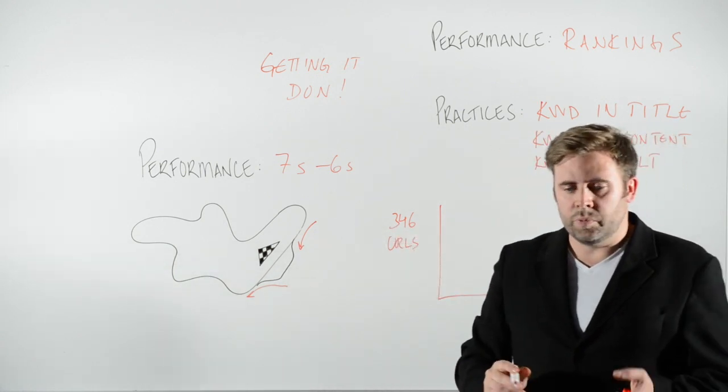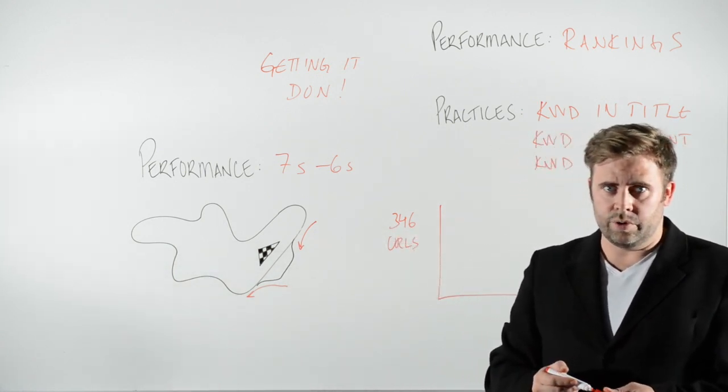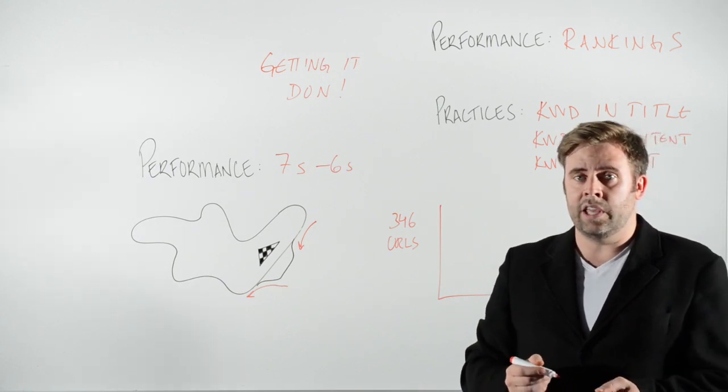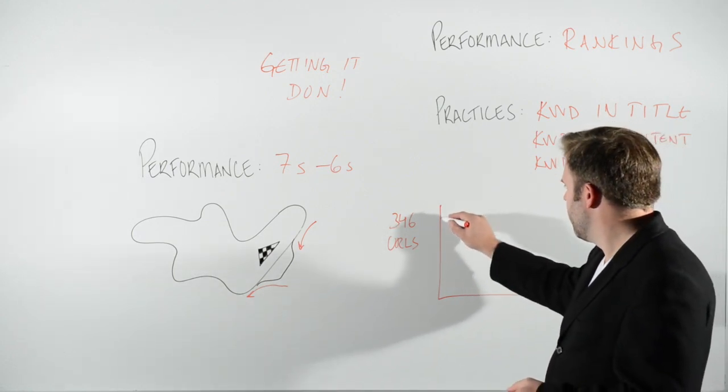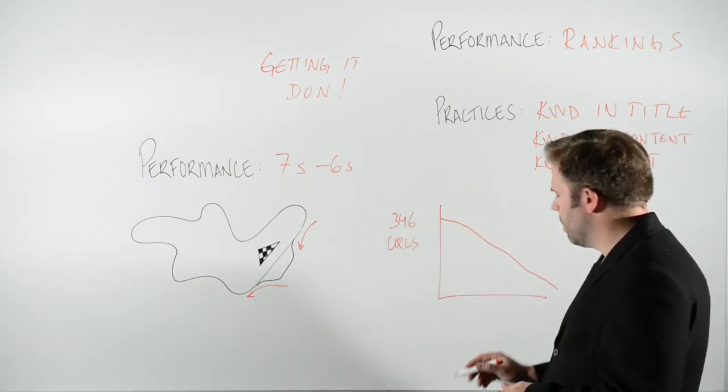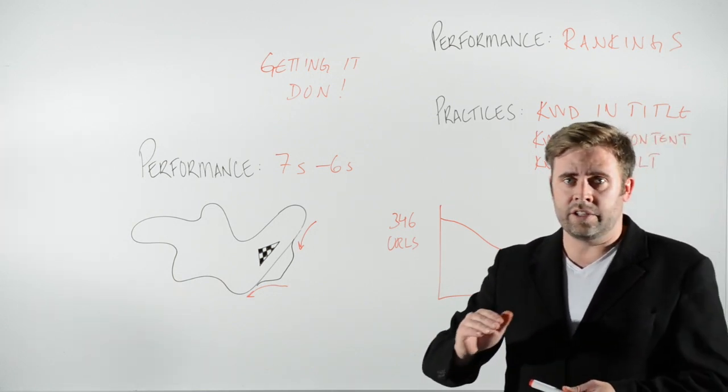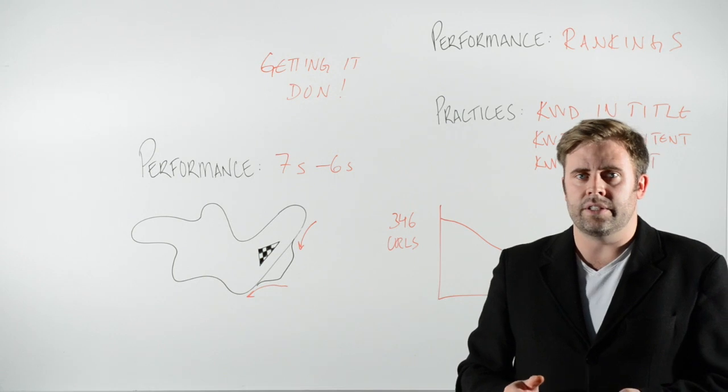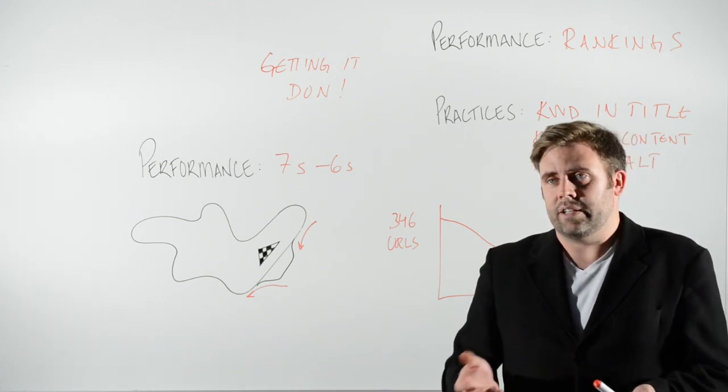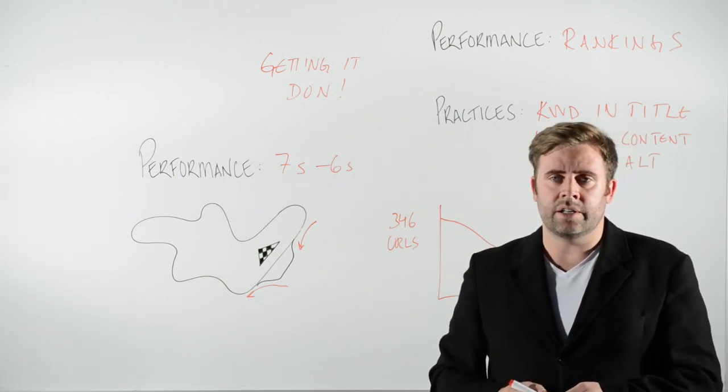So let's say when we start week one, we have 346 URLs that do not have the targeted keyword in the title tag. Then preferably over time, this would be a trend going down, because we want to have less and less pages that do not have the targeted keyword in its title tag.